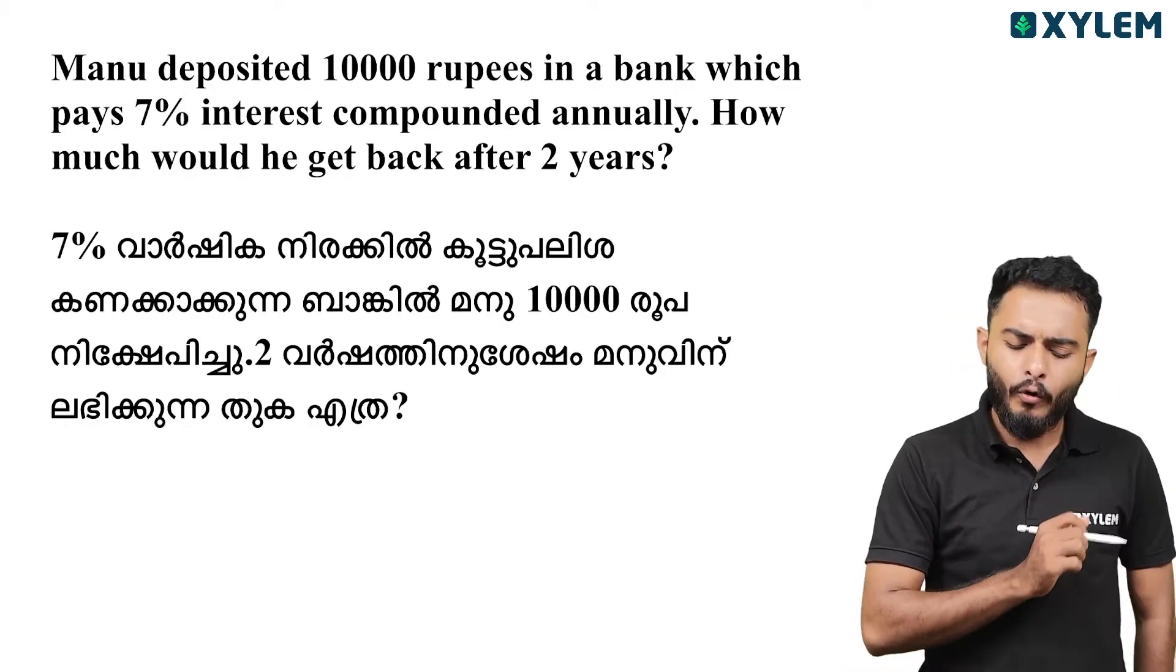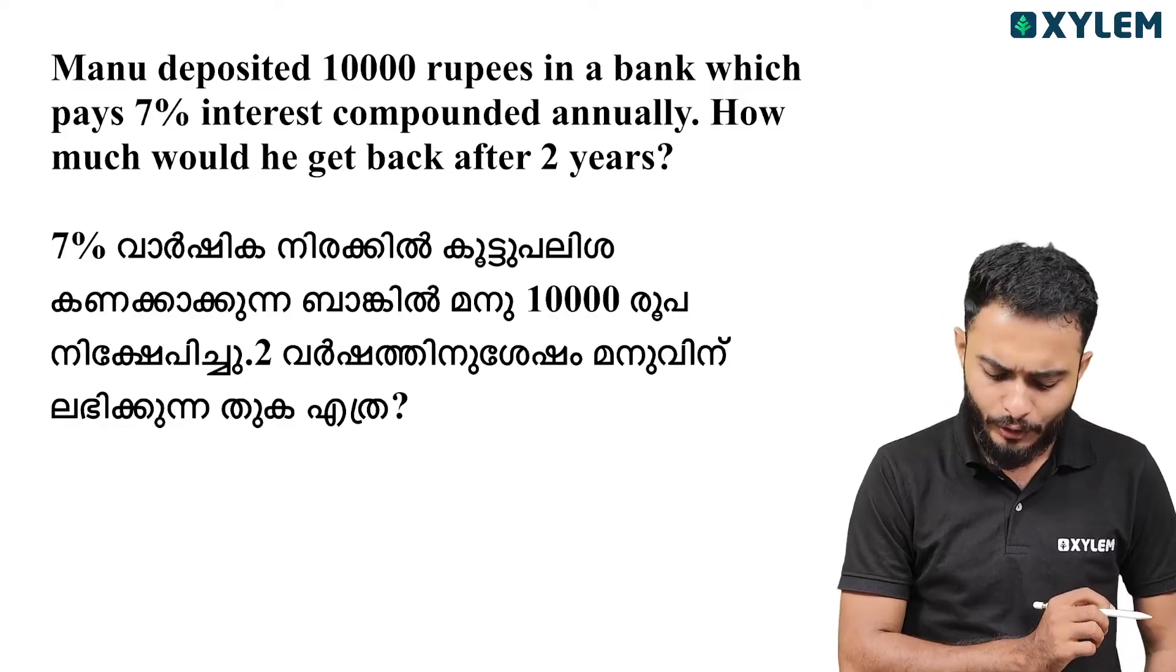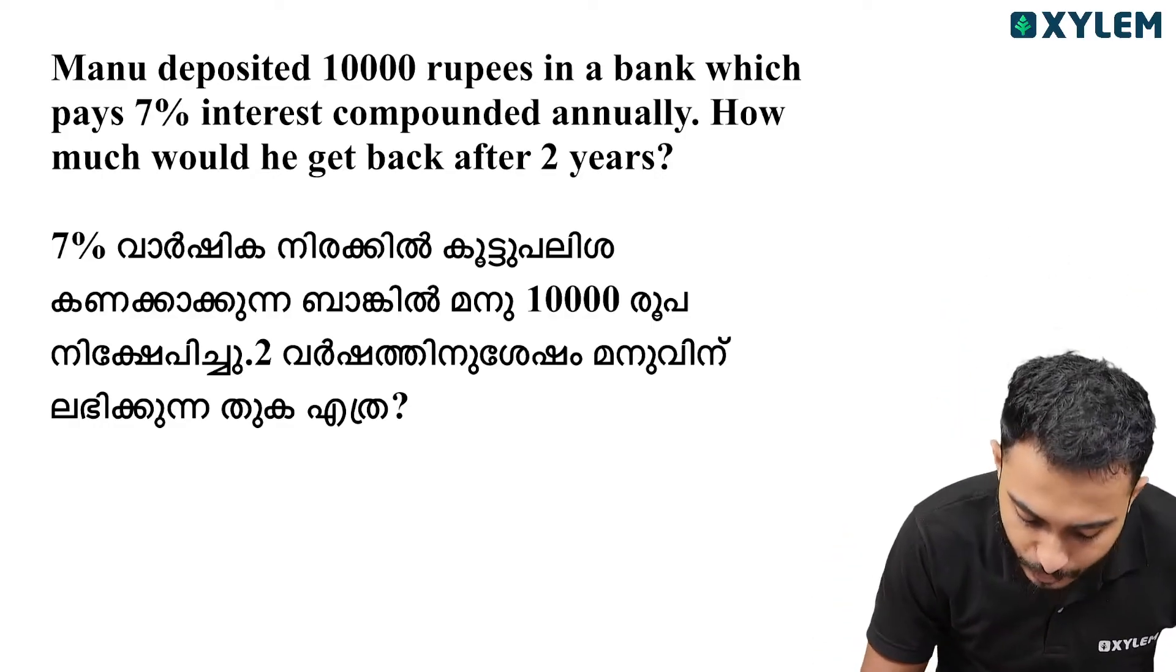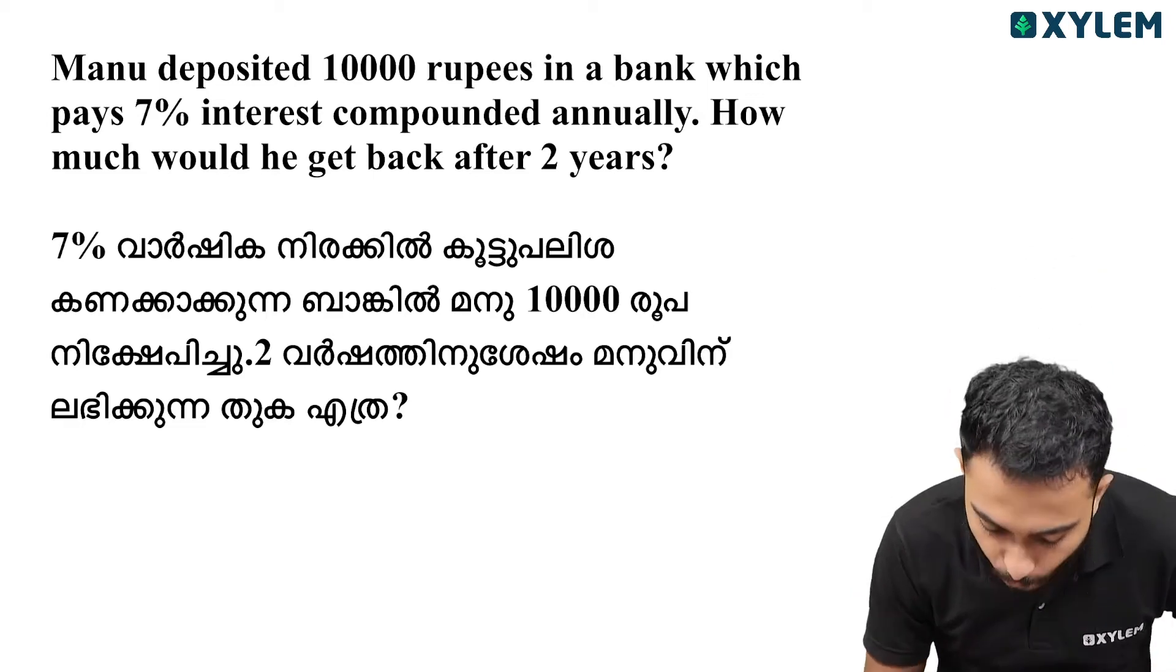So we have 10,000 rupees deposited in a bank which pays 7% interest compounded annually. This is compound interest.